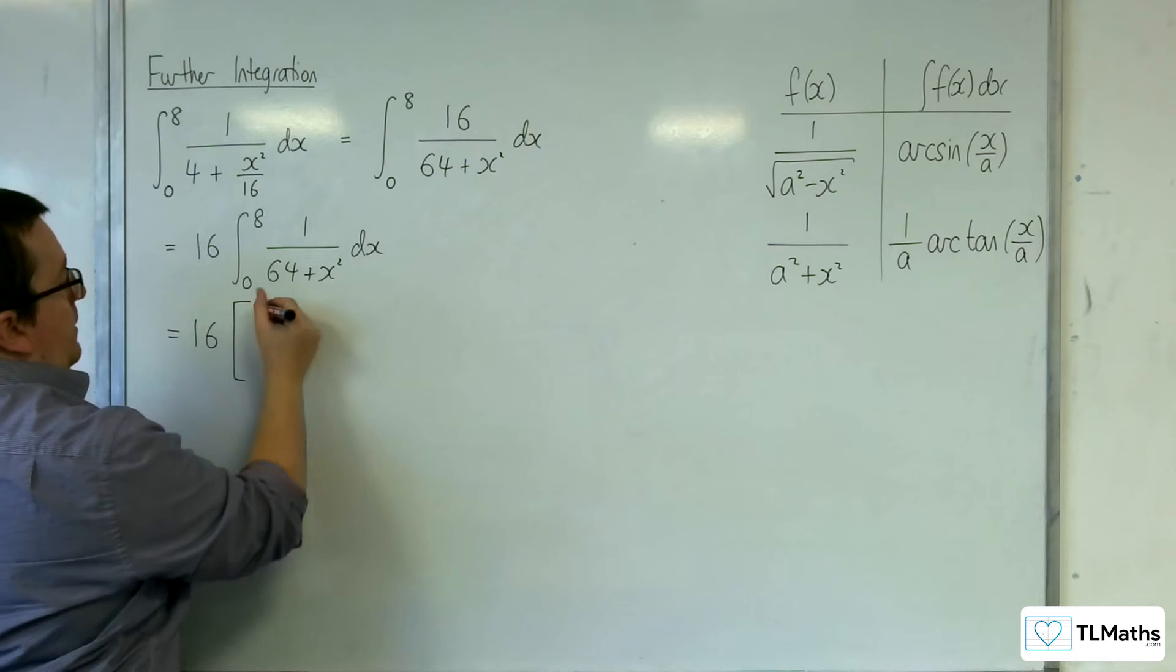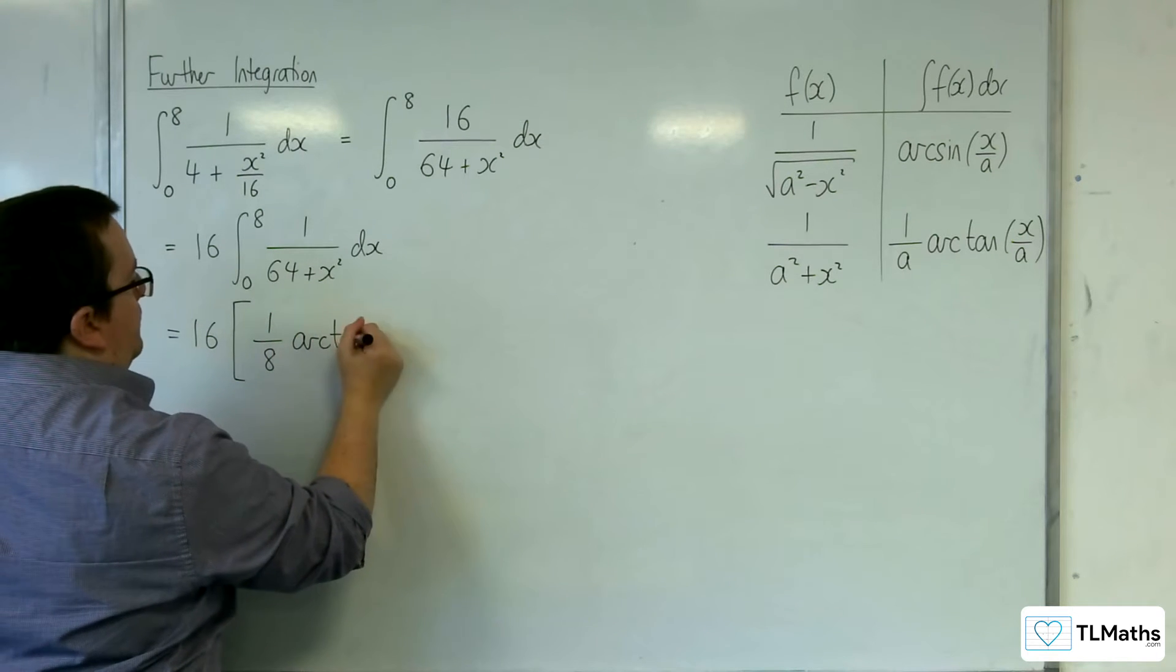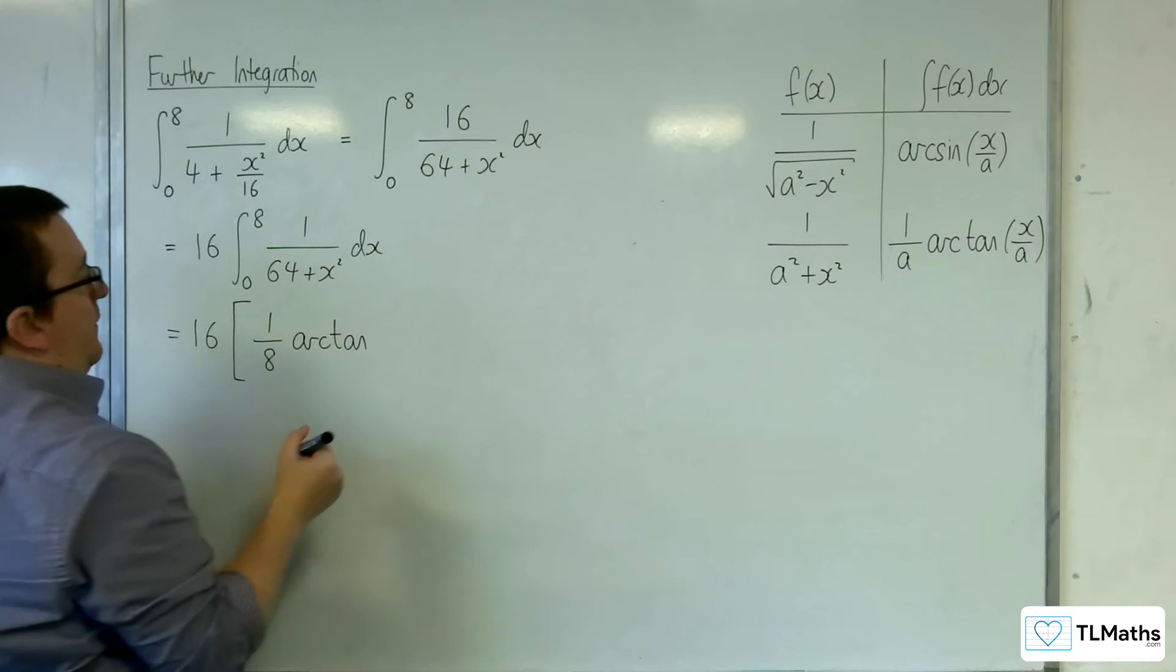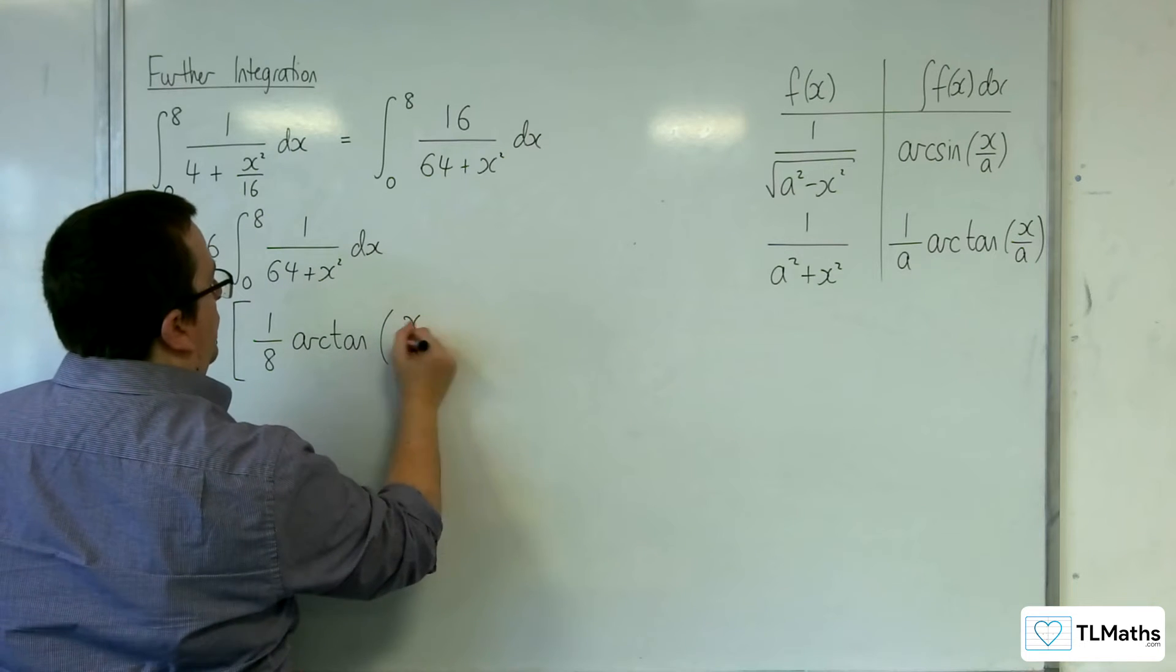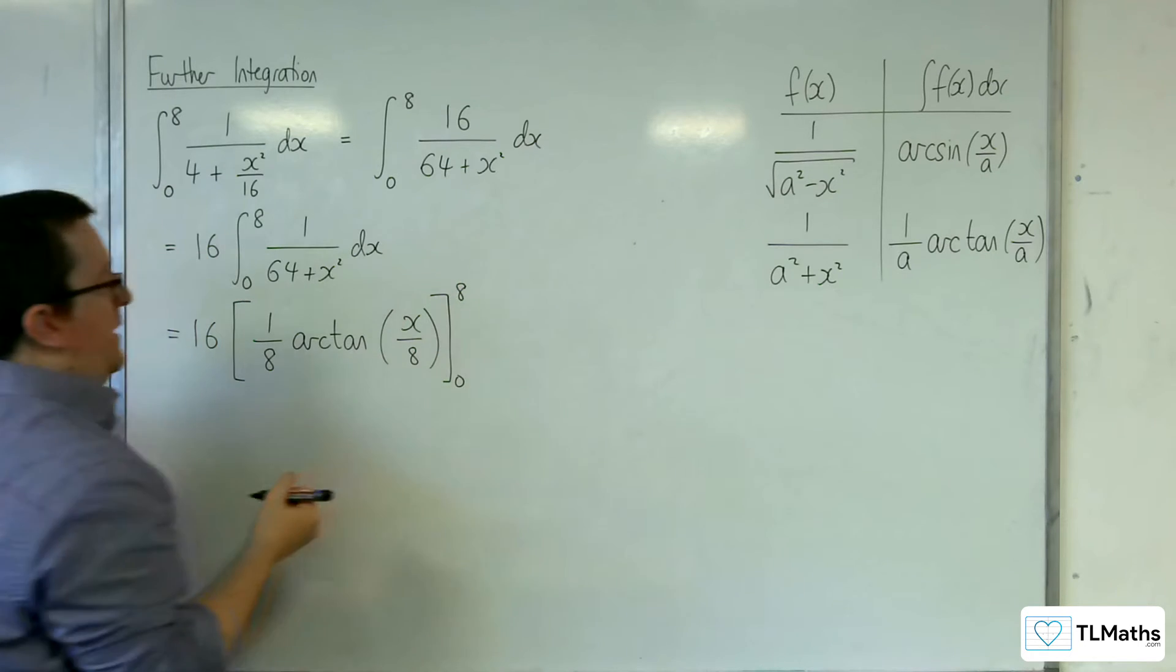Now it's 1 over a, so 1 over 8, arctan of x over a, so x over 8. Evaluate it between 0 and 8.